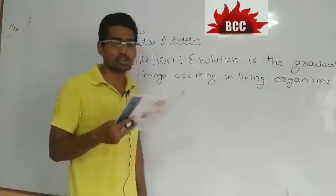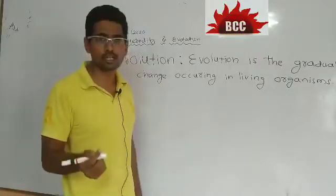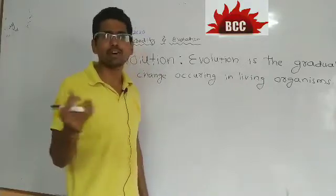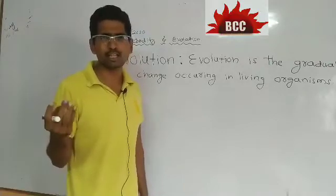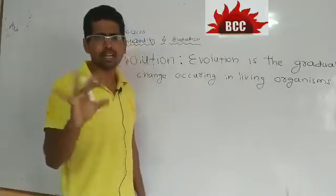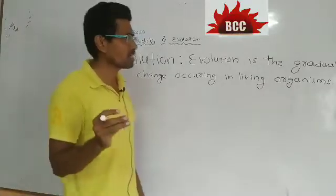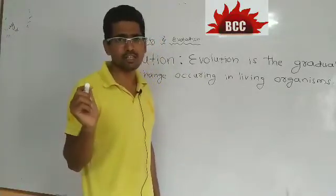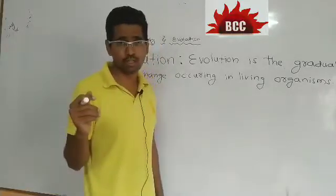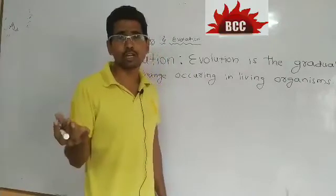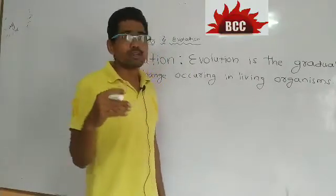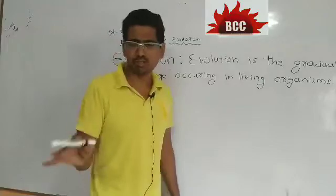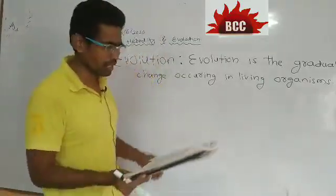Why did huge animals like dinosaurs become extinct? There are three reasons. First, a meteor hit the earth, causing temperatures to change dramatically. Second, the atmosphere changed and they could not adapt. Third, they were unable to adjust to the new conditions, so they became extinct.